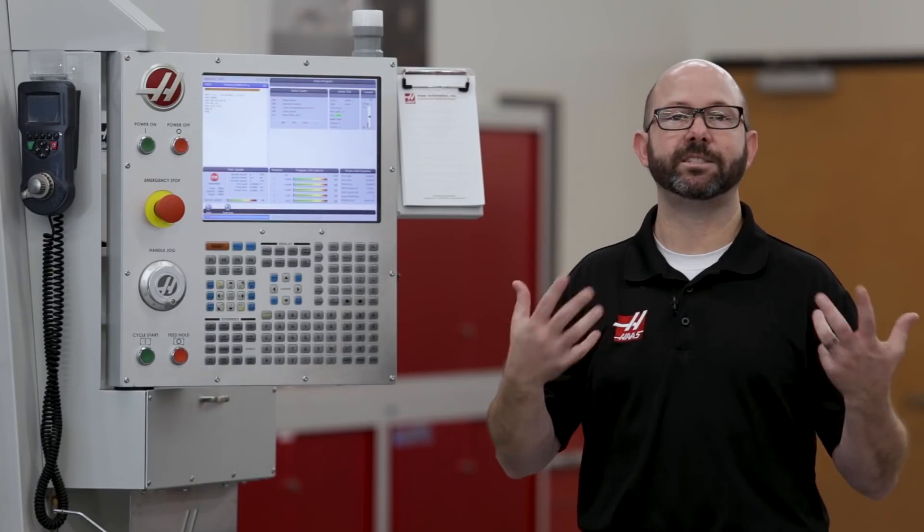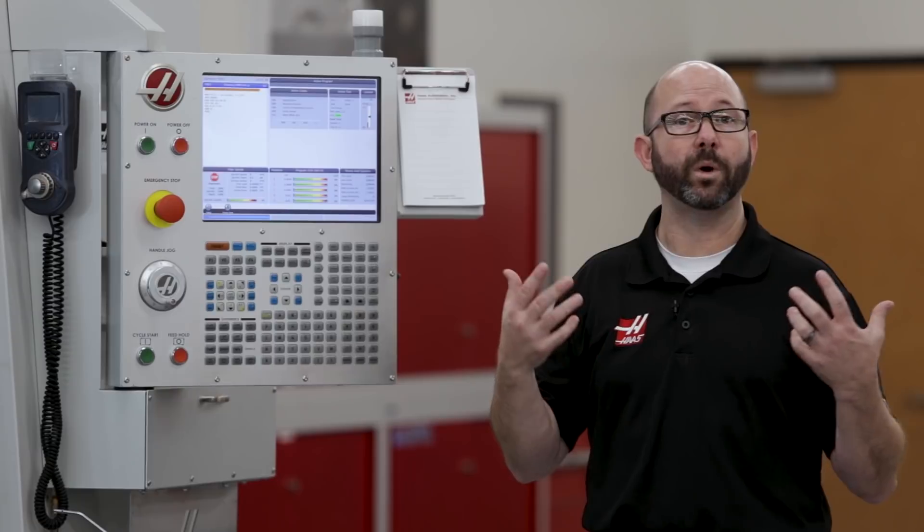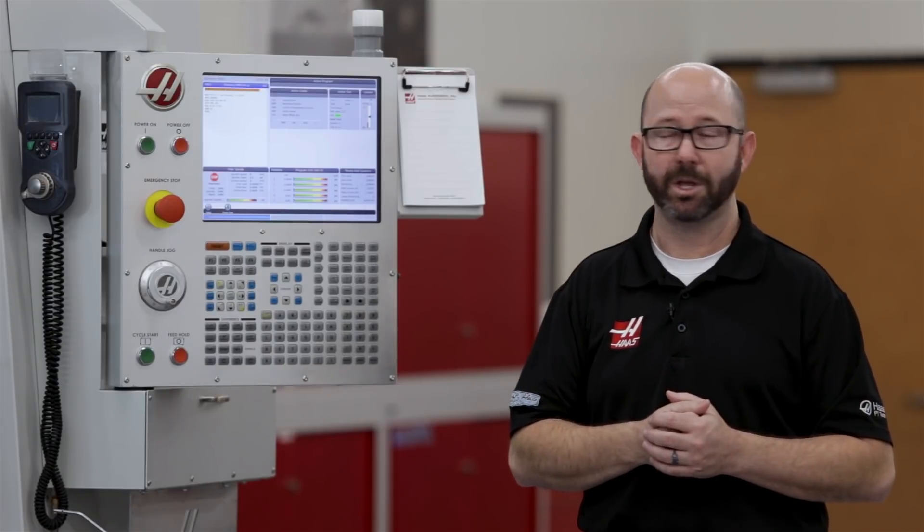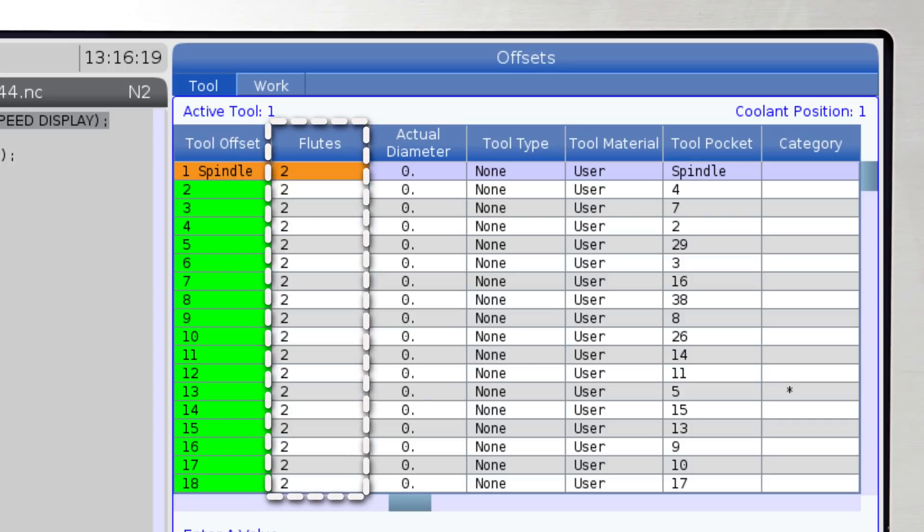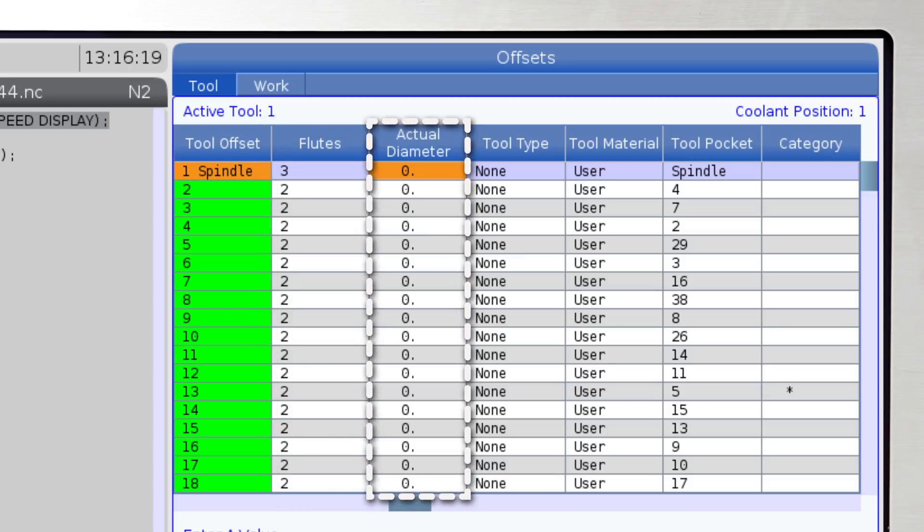And this information is really easy to enter on the control if you know which columns to use. So we'll enter our flutes, the number of flutes, onto the tool offset page in the column marked flutes. No surprise there. And we'll enter our tool diameter under the column that's labeled actual diameter. And that is it.